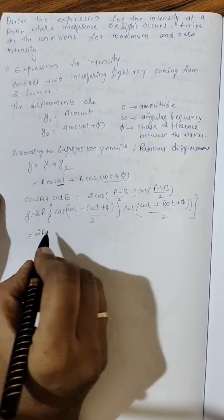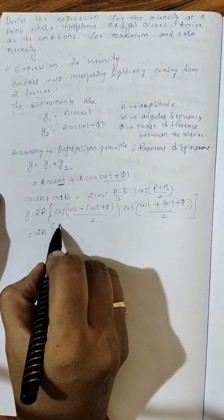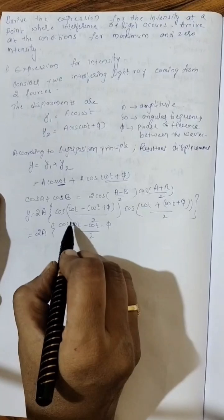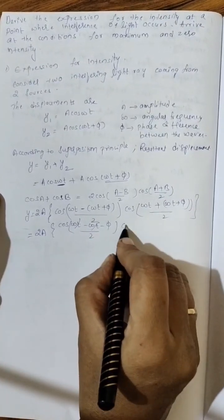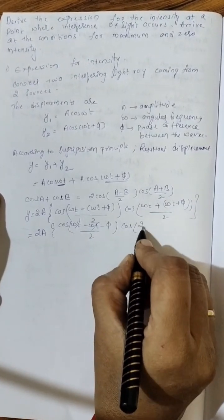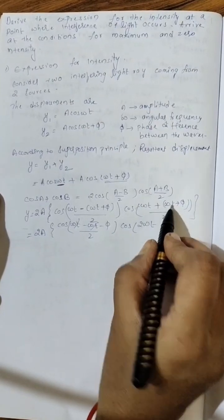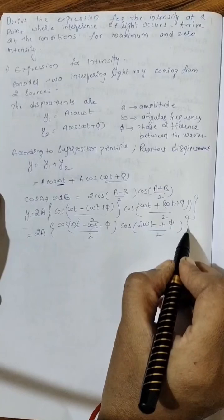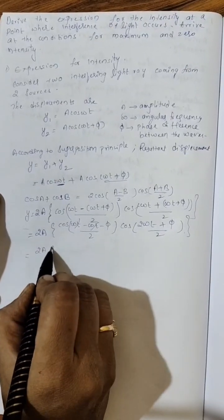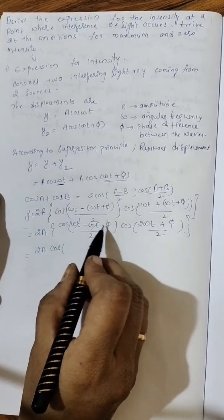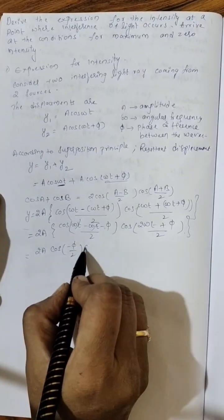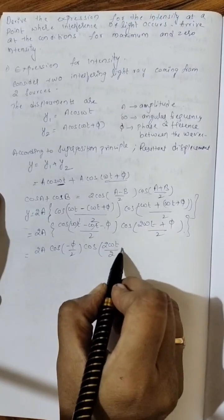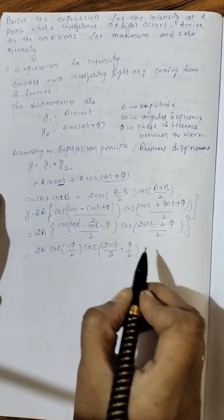Now just simplify: 2A cos omega t minus omega t minus phi by 2. Omega t plus omega t strikes off. Cos 2 omega t plus phi by 2. 2A cos, what is remained? Minus phi by 2 cos. Let us separate this like this: 2 omega t by 2 plus phi by 2. 2 strikes off.